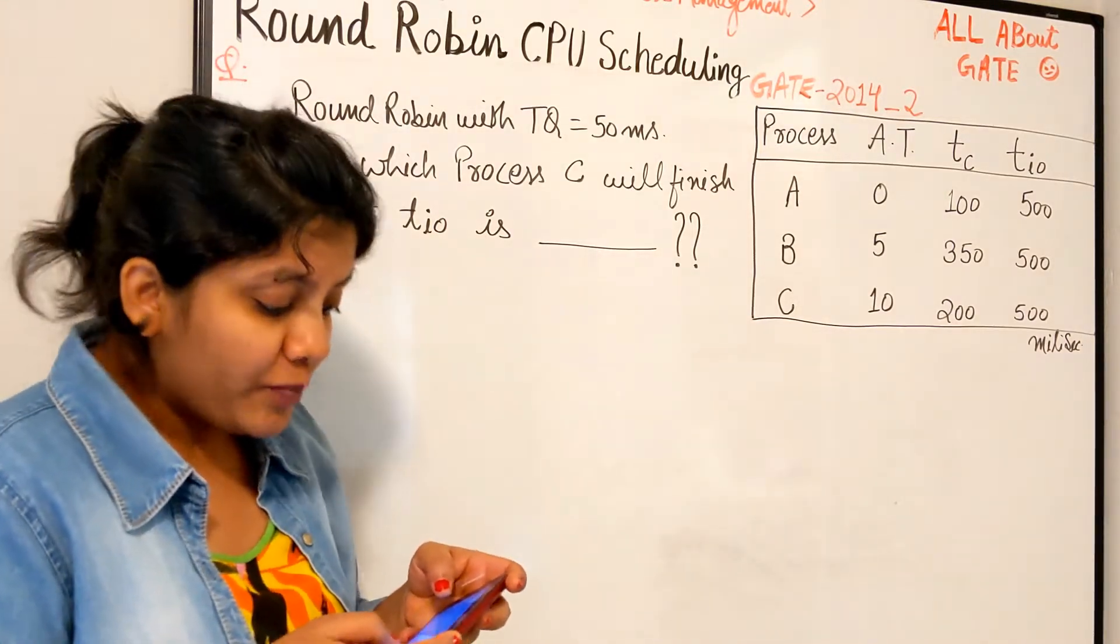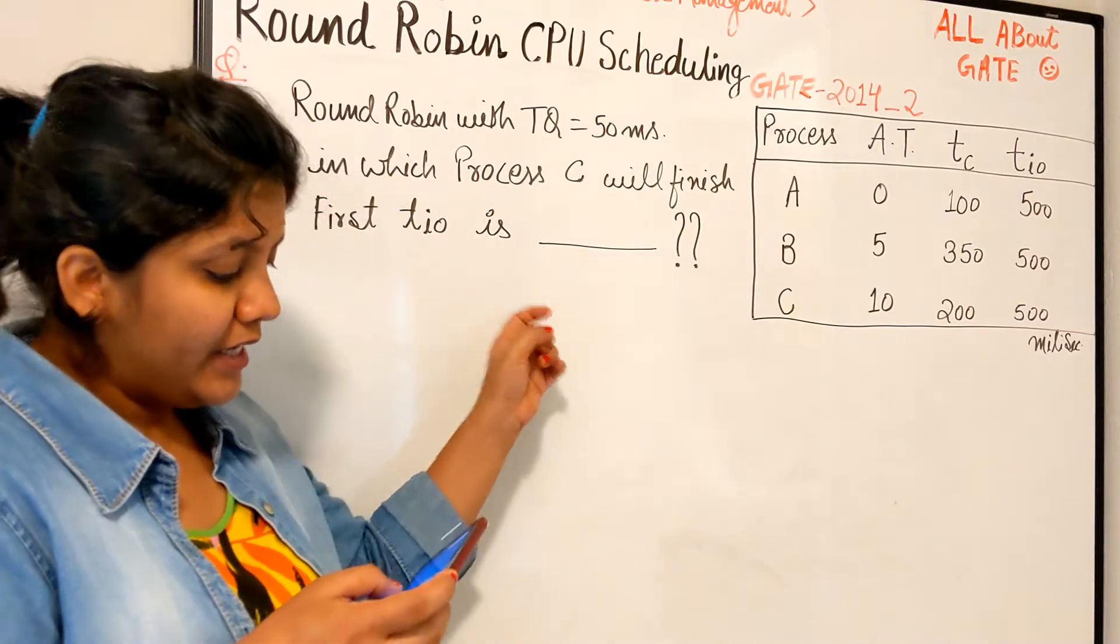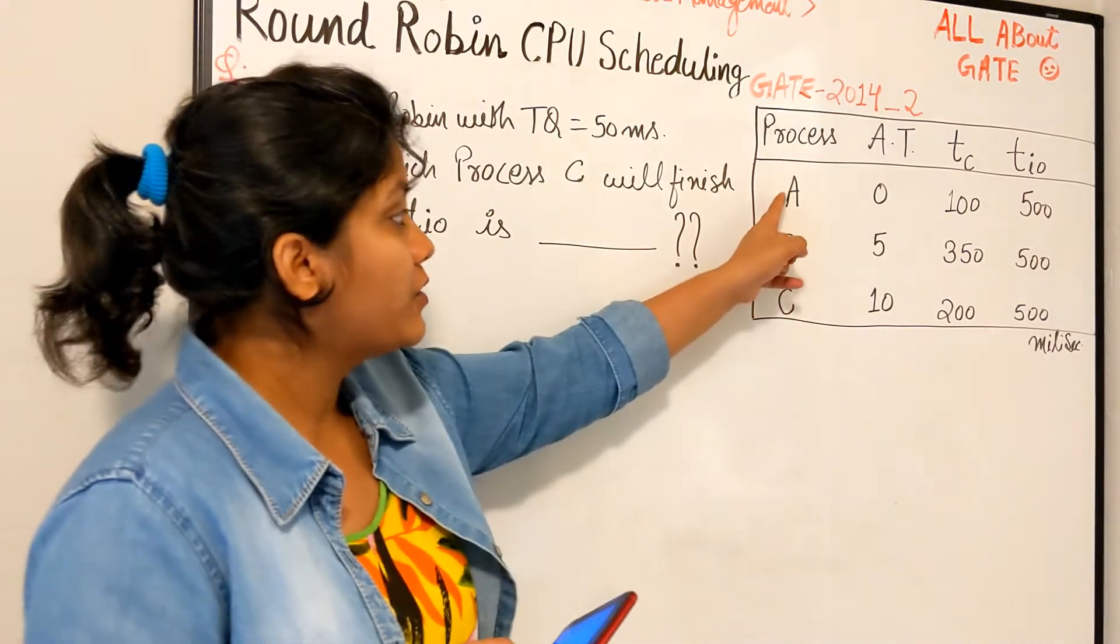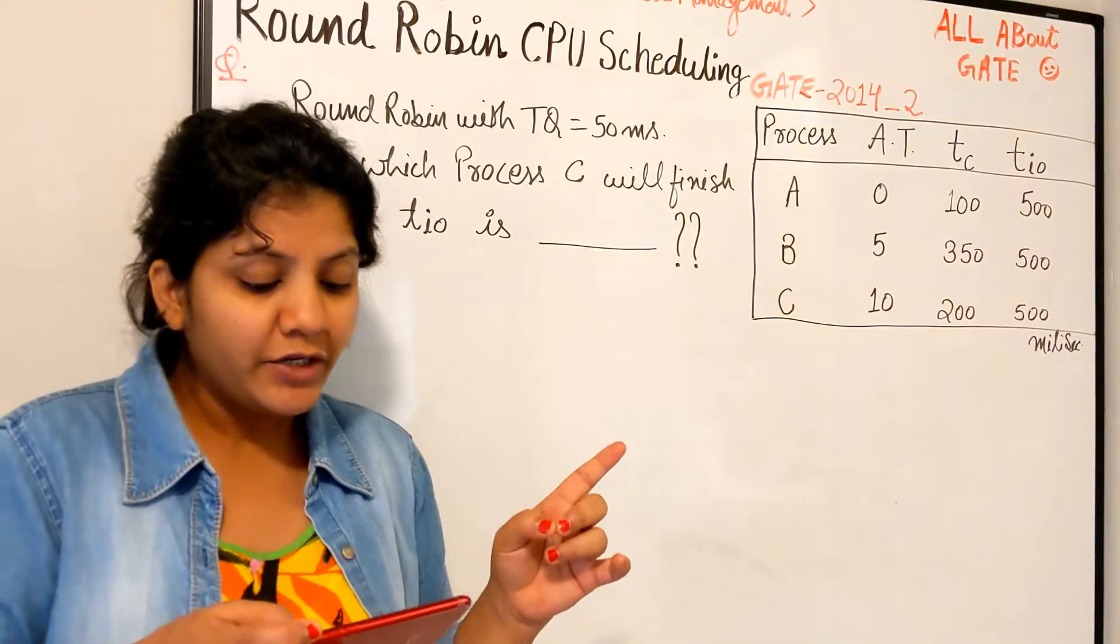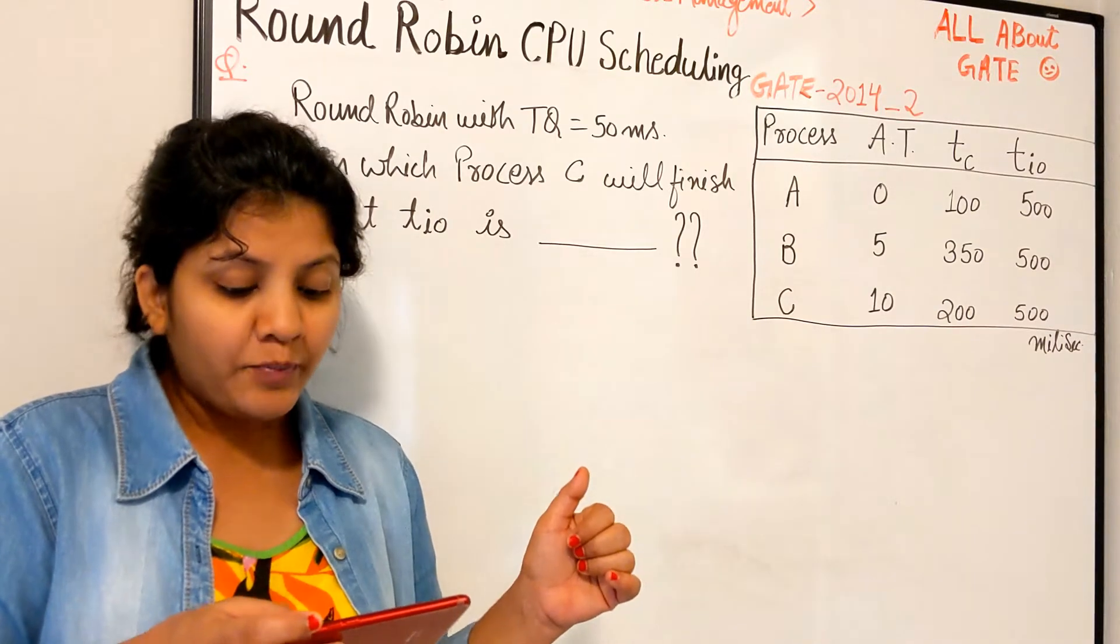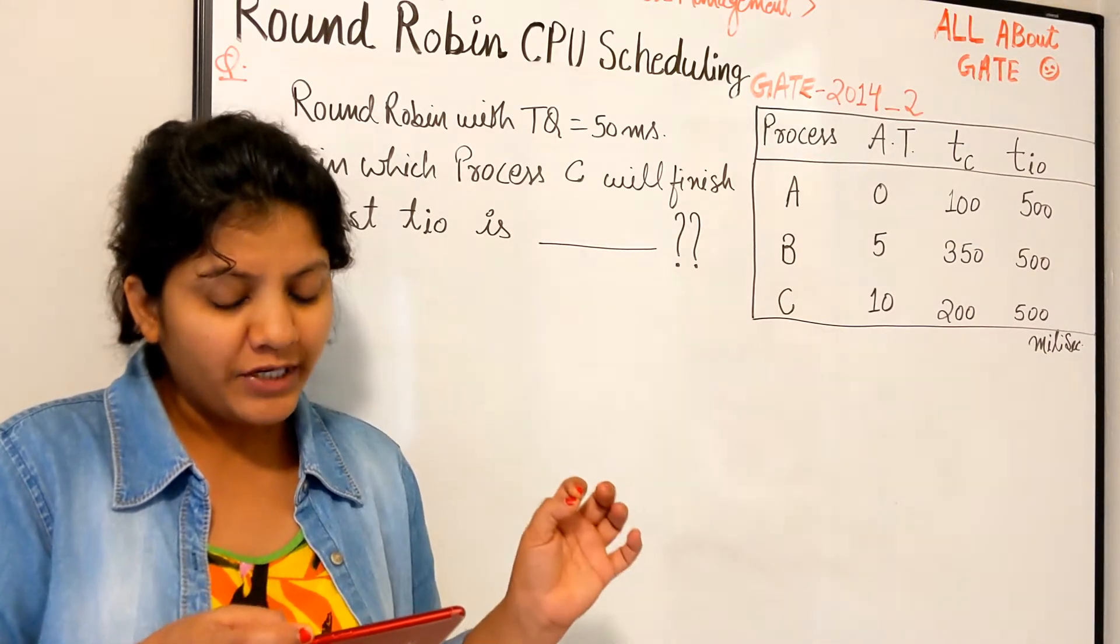Three processes A, B, and C each execute a loop of 100 iterations. So we have three processes ABC, they all execute a loop of 100 iterations. In each iteration of the loop, a process performs a single computation that requires TC CPU milliseconds.